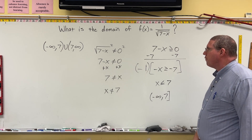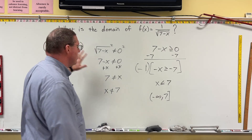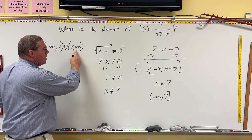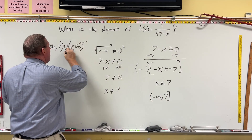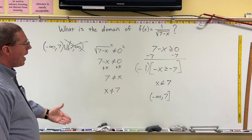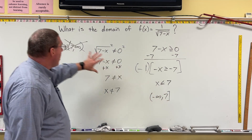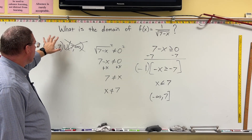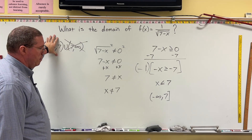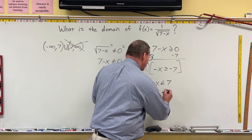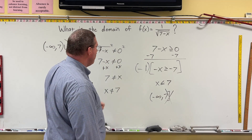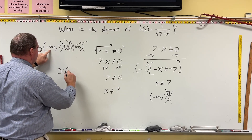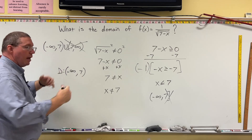We look over here to see if any part of the first domain is not included in this. Clearly, 7 to infinity is not in this, so we leave that out. The first domain goes to 7 with a parenthesis — not including 7 — while this one does include 7. So we cannot include 7. When we combine the two domains, we wind up with just negative infinity up to 7, and we're done.